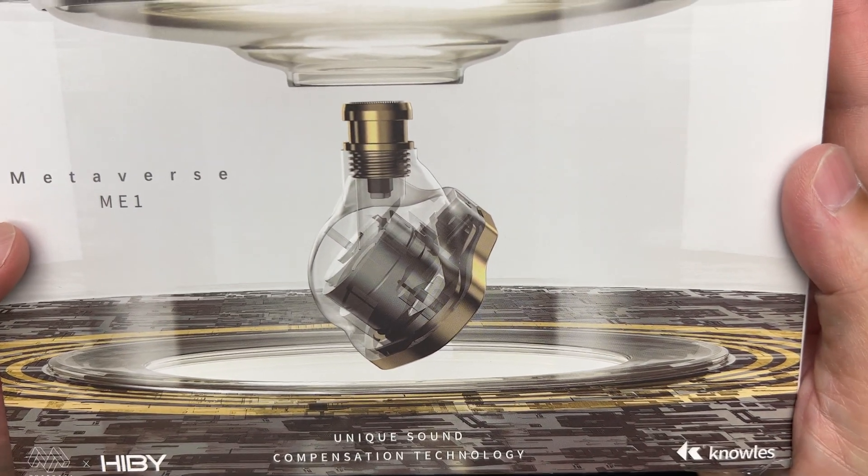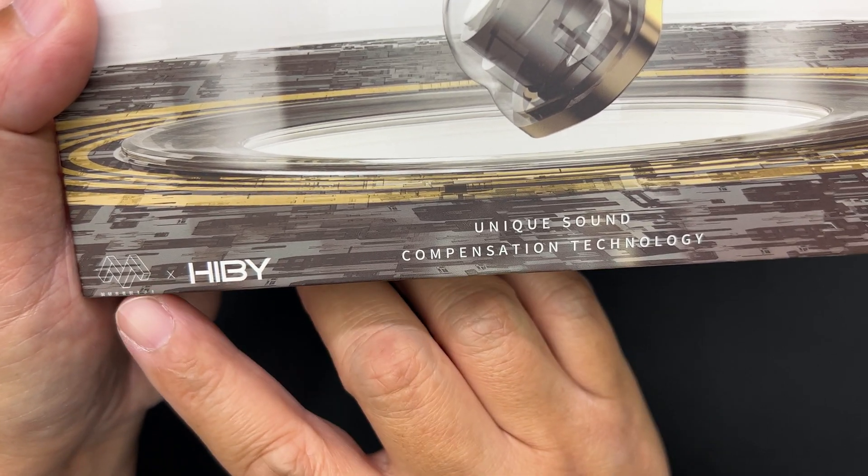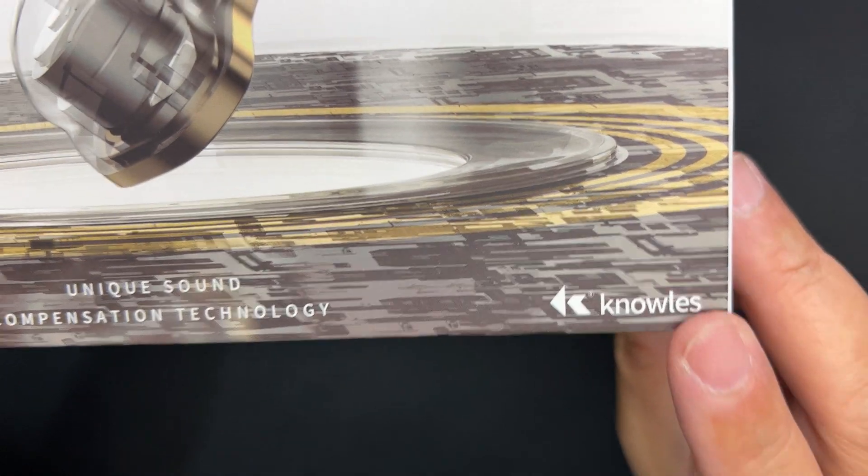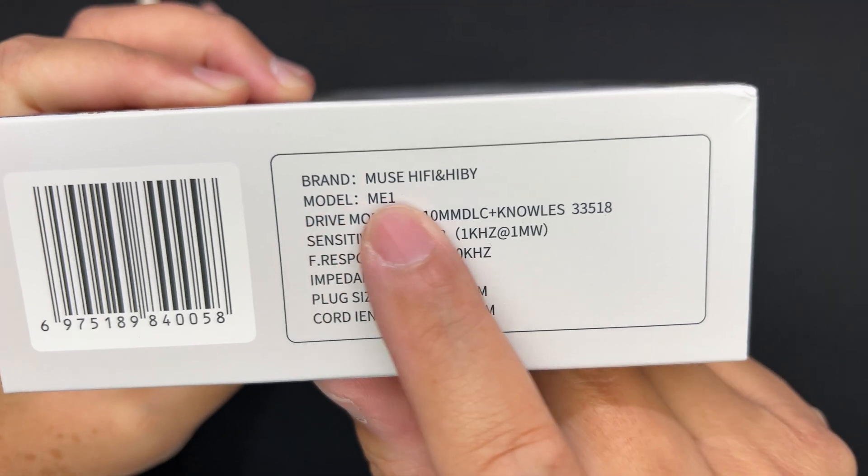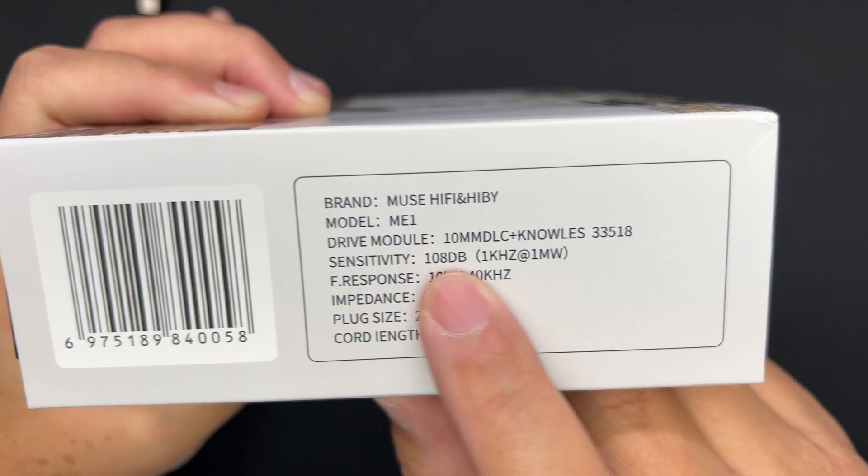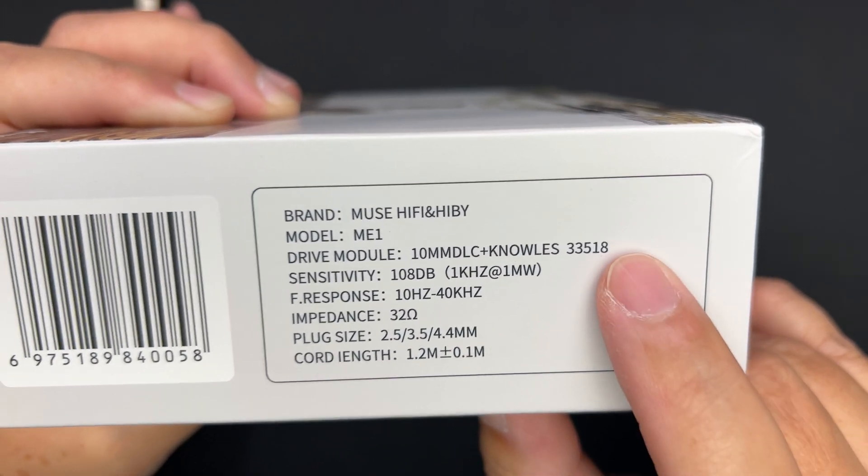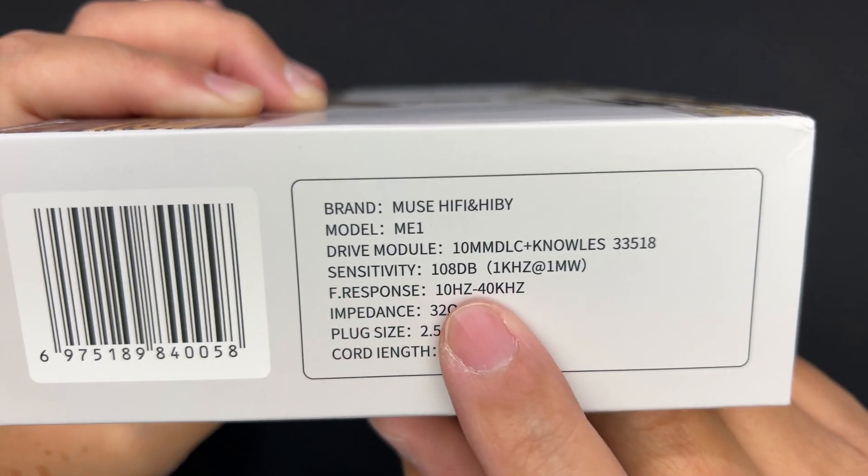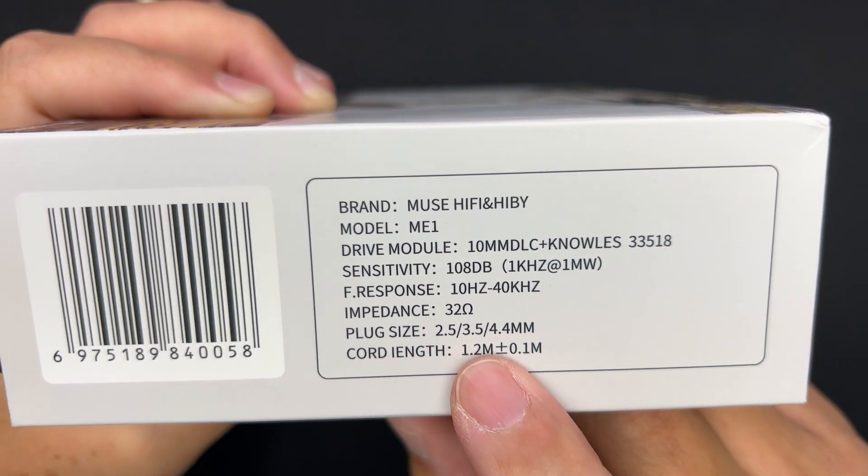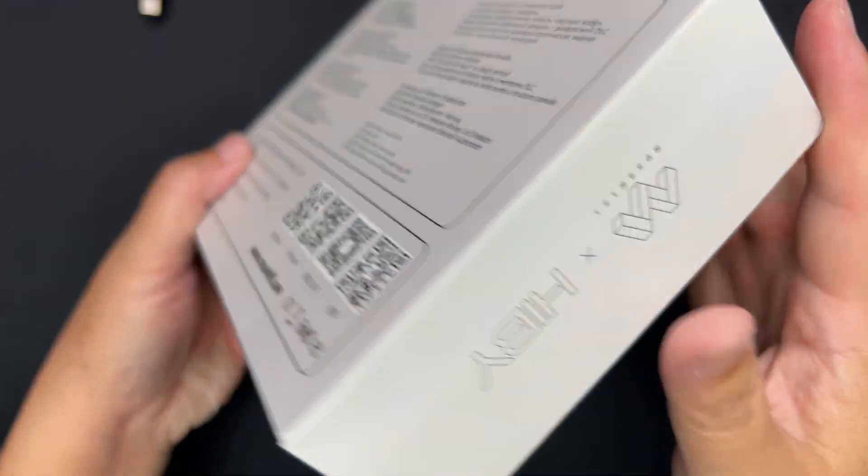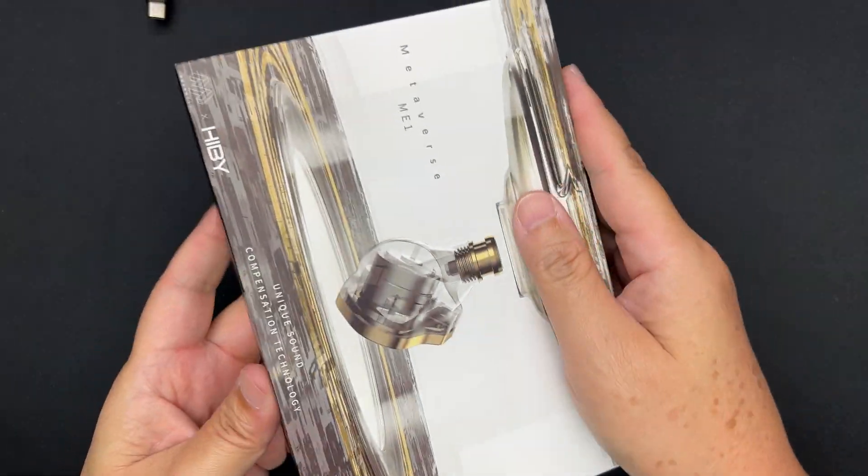Metaverse ME1 and you've got a very nice picture of the IEM here. It's a collaboration between Muse Hi-Fi and Hibee - unique sound compensation technology with Knowles. At the side here you have the specifications, so let's quickly go through it. The brand is Muse Hi-Fi and Hibee, model is ME1. The driver module is 10 millimeter DLC - this is DLC diaphragm plus Knowles 33518, which is a very well known balanced armature. Sensitivity is 108, frequency response is 10 to 40,000 hertz, impedance is 32 ohms, and you can have 2.5, 3.5, and 4.4.